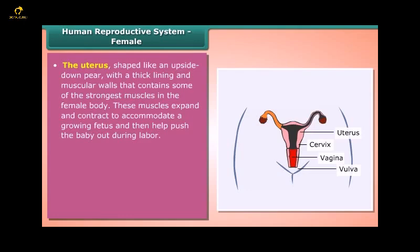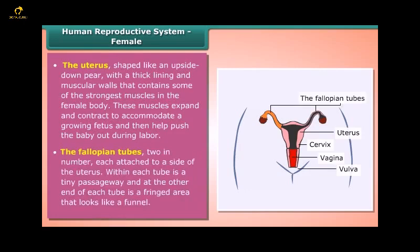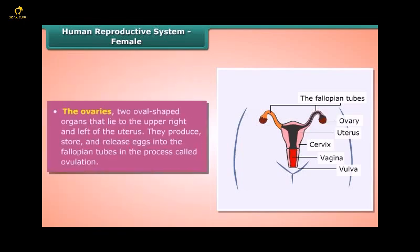These muscles expand and contract to accommodate a growing fetus and then help push the baby out during labor. The fallopian tubes, two in number, are each attached to a side of the uterus; within each tube is a tiny passageway, and at the other end is a fringed, funnel-like area. The ovaries are two oval-shaped organs that lie to the upper right and left of the uterus; they produce, store, and release eggs into the fallopian tubes in a process called ovulation.